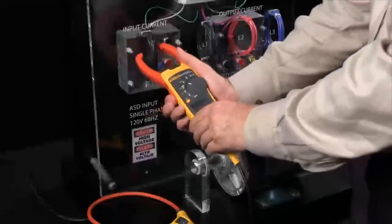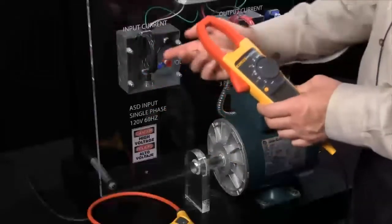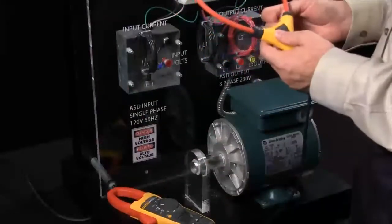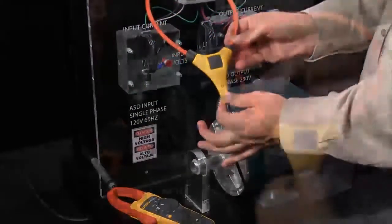There's going to be plenty of times when you can't access a current bundle. Maybe the conductors are too large, or perhaps they're too close to an enclosure to gain easy access and take the measurement. That's when the iFlex comes into play.